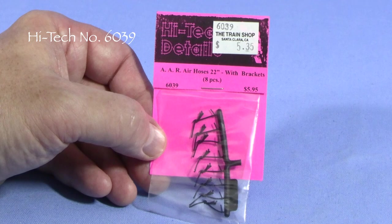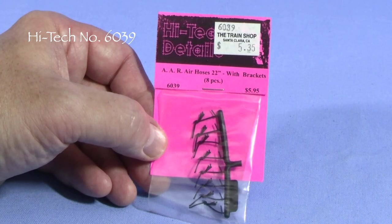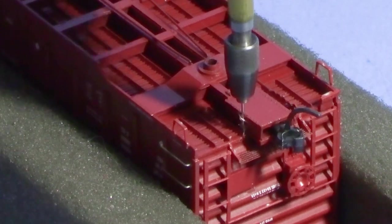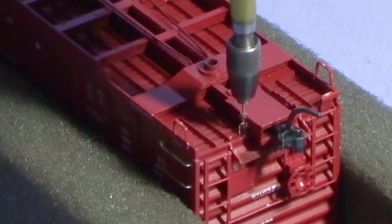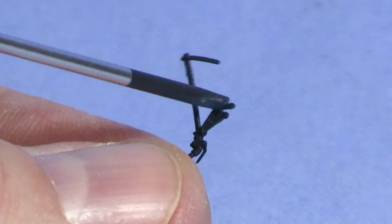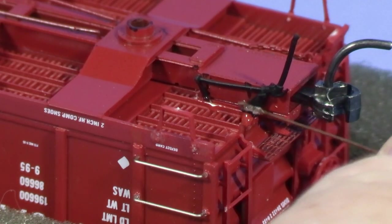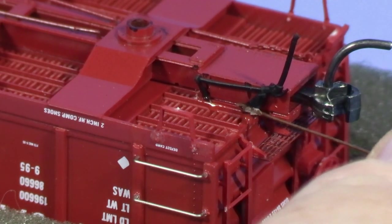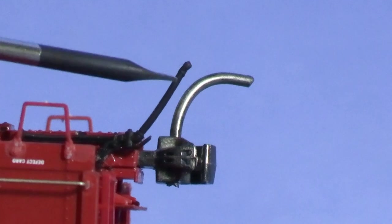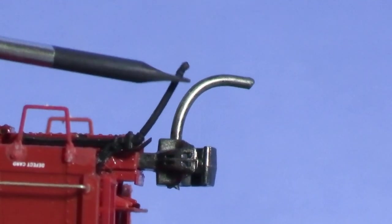This is High Tech Detail Part 6039. These are air hoses with brackets and they look similar to the ones that came with the car, but these are rubber and they should be a lot more durable. I've temporarily removed one of the trucks and I'm drilling a pair of holes right near the draft gearbox. These hoses have a mounting bracket with a little nub on it and then this other little piece that sticks up and these go in the two holes. Coaxing these into position can be a little tricky. When I'm happy with where they are, I'll use a little CA to secure them. Even though these are flexible enough and probably won't get hung up on anything, I like to make sure that the rubber hose doesn't hang down any farther than the coupler trip pin.